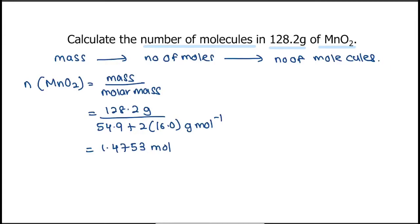Using this value, let's calculate the number of molecules. Using the formula number of molecules of MnO2 equivalent to number of moles, which is 1.4753 multiplied by Avogadro constant, which is 6.02 times 10 to the power of 23. That would be 8.88 times 10 to the power of 23 molecules.